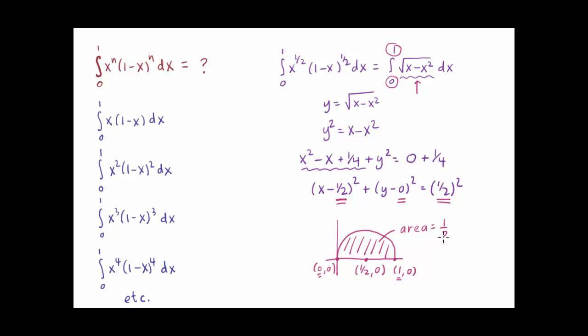So this definite integral is calculating the area inside this semicircle, and the area of a semicircle is easy to find. It's one-half, because we're doing a semicircle not a full circle, times pi times the radius squared. And that simplifies to pi over eight. So the punchline is that this integral is equal to pi over eight, and we'll need that fact later.